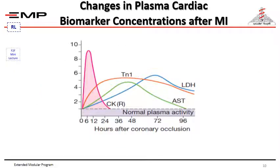This slide shows changes in plasma cardiac biomarker concentrations after myocardial infarction. Creatine kinase and troponin I are the first to rise, followed by aspartate transaminase (AST), then lactate dehydrogenase (LDH) or hydroxybutyrate dehydrogenase. It is worth noting that in patients treated with reperfusion therapy — whether primary percutaneous intervention or thrombolytic therapy — a rapid rise in plasma creatine kinase occurs, called the washout effect.